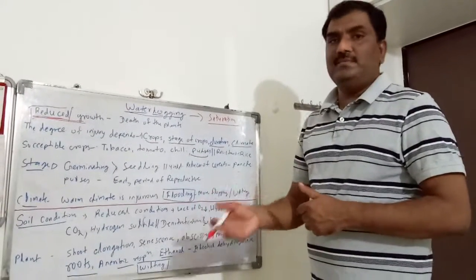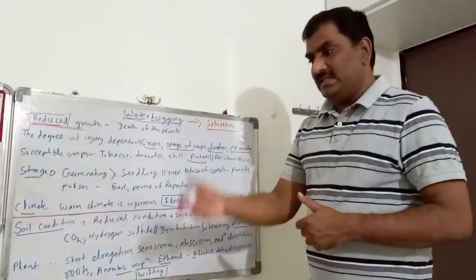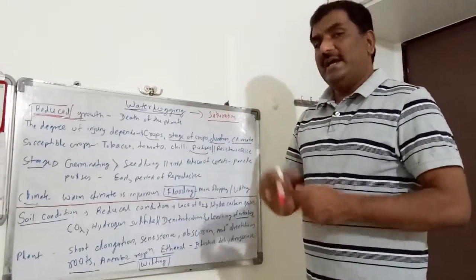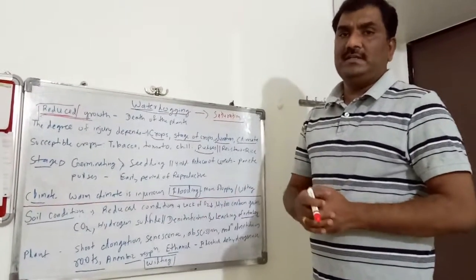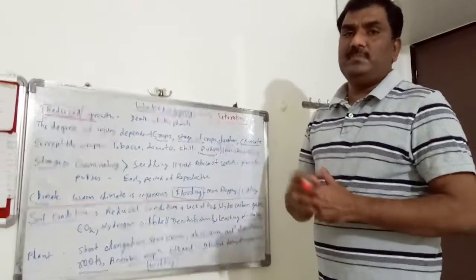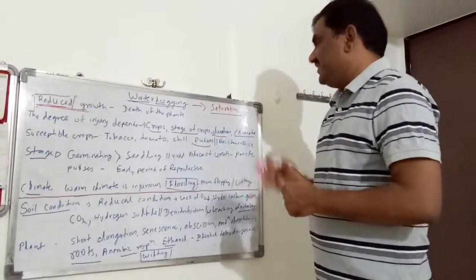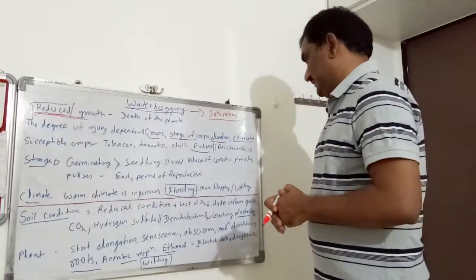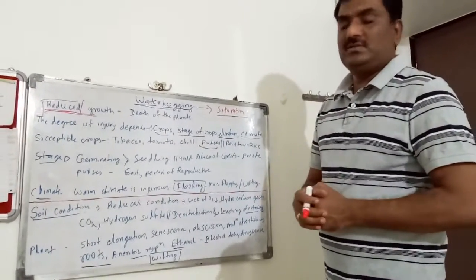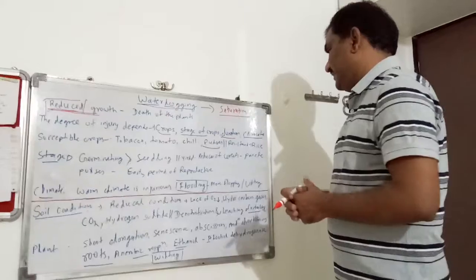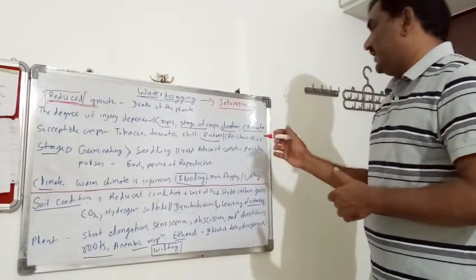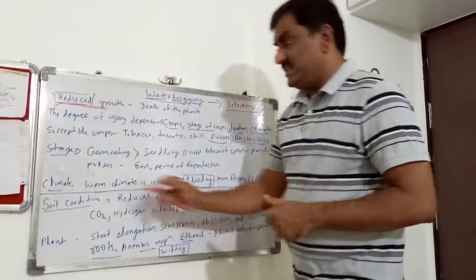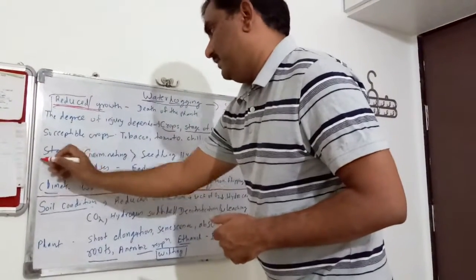Pulses are leguminous crops and depend on Rhizobium for nitrogen fixation. This nitrogen fixation is aerobic because it requires oxygen for microbial activities. If oxygen is not there, Rhizobium activity will not be there, root activity will not be there. Hence pulses are quite susceptible to waterlogged conditions. Rice, having aerenchymatous tissues, is resistant to waterlogged conditions.